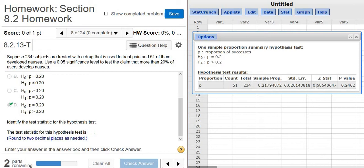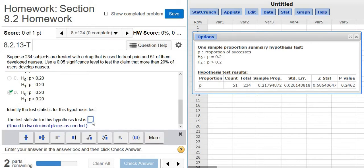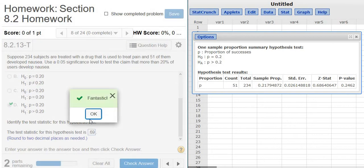There it is. There's our test statistic, Z-stat. It wants two decimal places, so it's going to be 0.69. I'll type it in over here, 0.69.